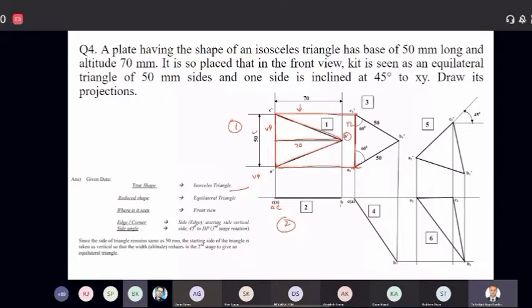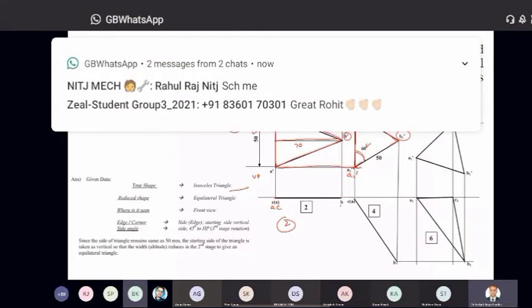Now draw a line at an angle of 60 degree, another line at an angle of 60 degree. So these two lines, they will intersect at point B1 dash. So mark this point A1 dash, B1 dash and C1 dash. So this is our third step.